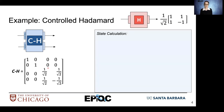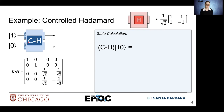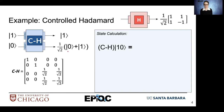Now let's practice with the state calculation. Let's say we have the state ket-10 that we want to transform by our controlled-H gate. We will have ket-1 on the top terminal going through the control input and ket-0 going through the target terminal. The ket-1 will pass through the top, and then our ket-0 will be transformed into a state of superposition: one over the square root of two, multiplied by ket-0 plus ket-1.